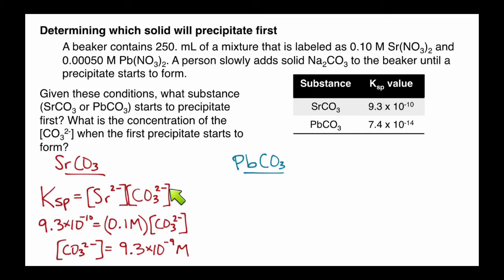Now those carbonate ions, remember, are coming from the sodium carbonate. The strontium ions are coming from the strontium nitrate here, which we had 0.1 molar of. At this point, we're going to do the same thing for lead carbonate.